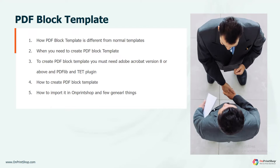To create PDF block templates, you must have Adobe Acrobat version 8 or above, and you need to install the PDFlib plugin and TET plugin. The PDFlib plugin is useful to create PDF block templates, and the TET plugin is used to find out the exact coordinates of available text in the PDF file.